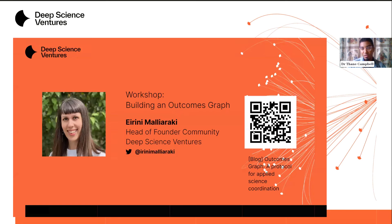In round two we share a video with you so you can listen to Irini Maliraki, our head of founder community, talk more about what each of these terms mean and how we use them in scoping. She also shows examples that will be super useful for people applying for round two. It's called 'Building an Outcomes Graph' and you can use the QR code to check it out.